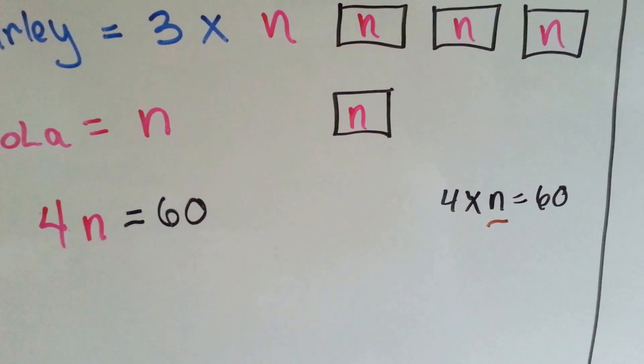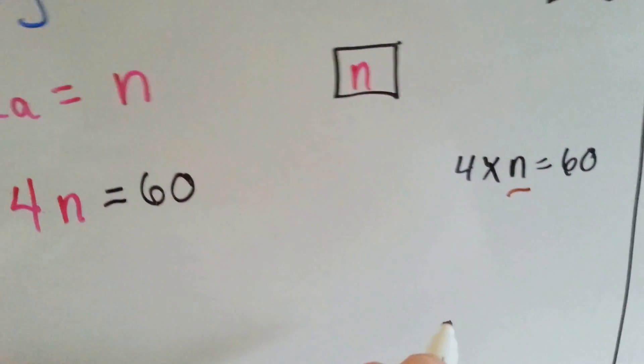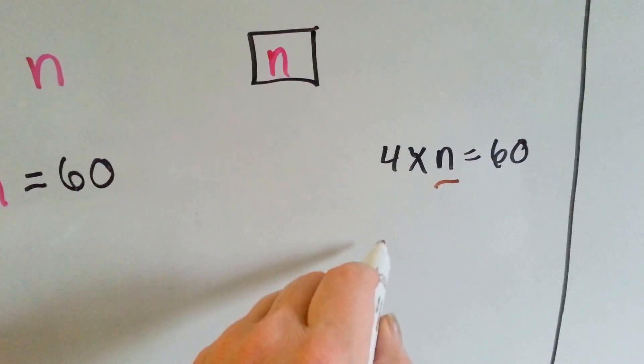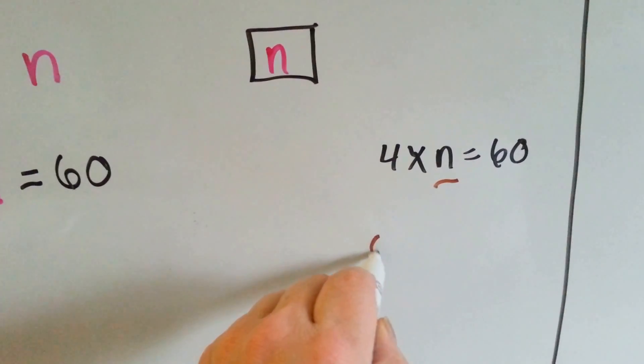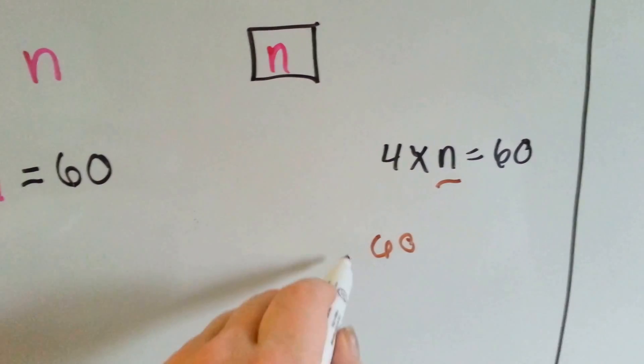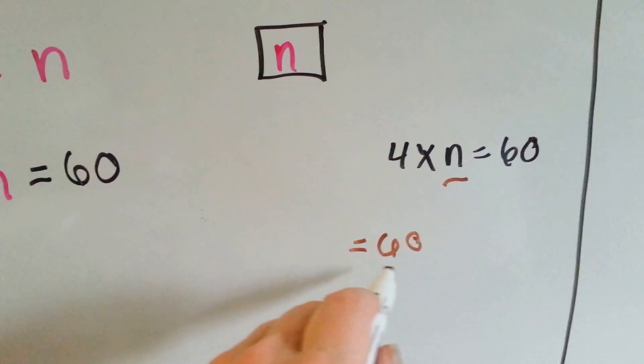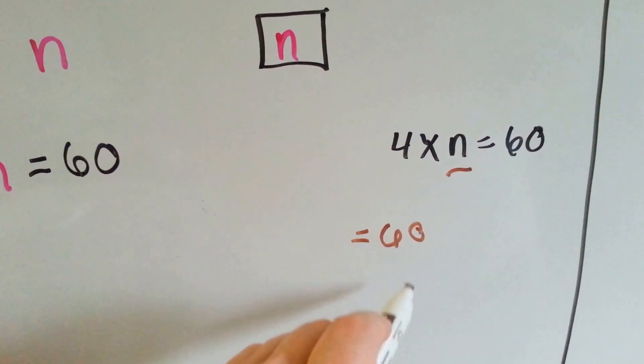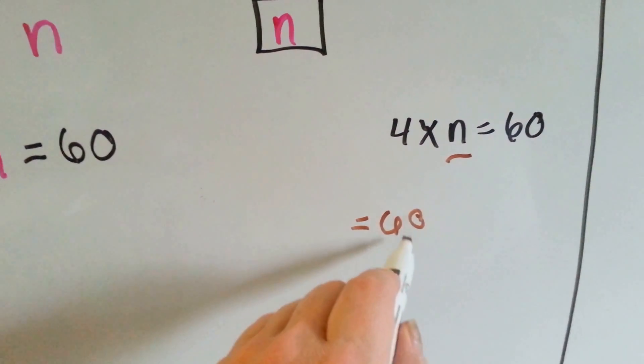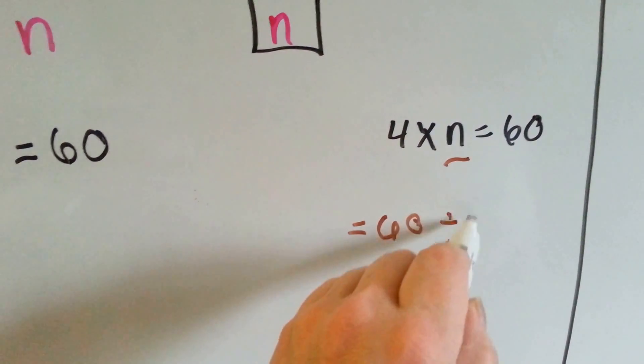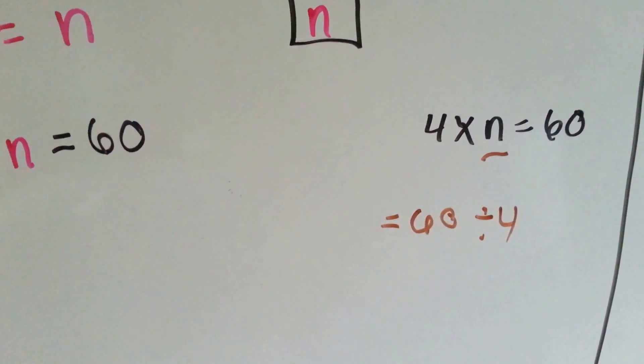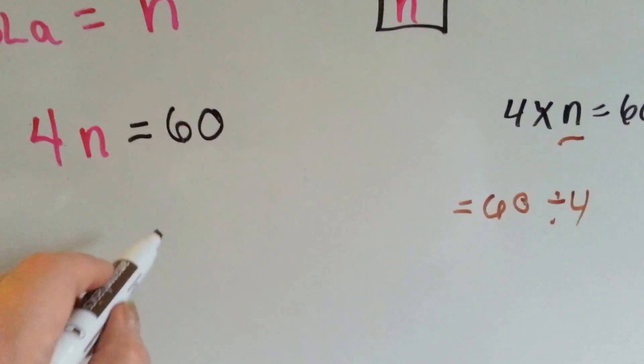Well, how many fours are in 60? You could do that. We could do that division. 60 is the same thing as 60 divided by four. We could do that. The number is 15.